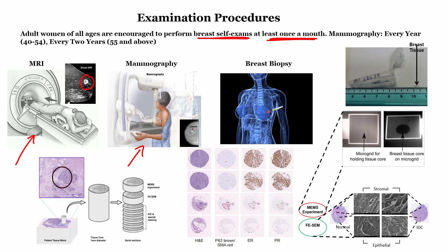When a suspected region is identified, the patient undergoes a biopsy where tissue is extracted with a biopsy needle and tested for biomarkers such as HNE, P63-SMR, estrogen, and progesterone. There is also the HER2 biomarker, and when all three biomarkers are absent it is called triple-negative breast cancer.